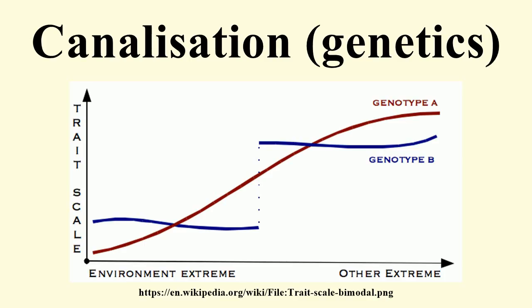He then selected for crossveinless. Eventually, the crossveinless phenotype appeared even without heat shock. Through this process of genetic assimilation, an environmentally induced phenotype had become inherited. Waddington explained this as the formation of a new canal in the epigenetic landscape.